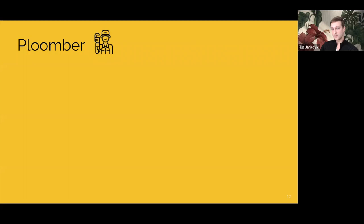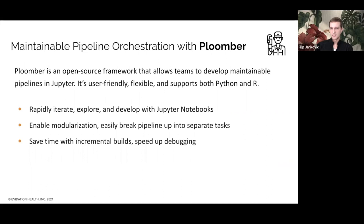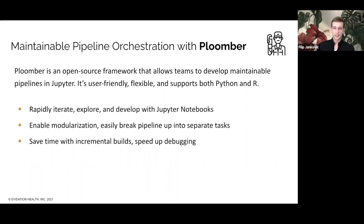This brings us to Plumer. We did a comparative analysis of open source pipeline orchestration tools and picked Plumer because it's easy to get started with and accessible for data scientists across the org to adopt. It supports both Python and R, which is great because we have both R and Python data scientists in our org — we wanted to enable everyone to adopt workflow management. Additionally, Plumer supports orchestrating and developing with Jupyter Notebooks, allowing us to rapidly iterate, explore, and develop directly using Jupyter. It enables modularization so we can easily break the pipeline up into separate tasks, and it saves us a lot of time with incremental builds to speed up the debugging process.